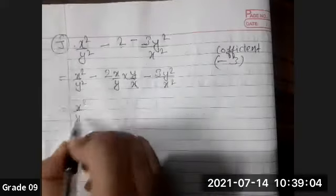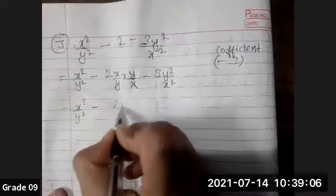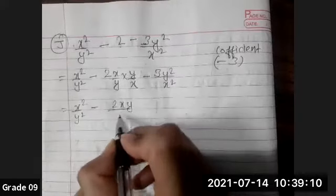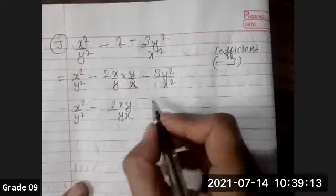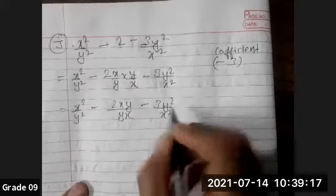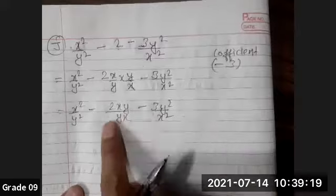Then the solution will be started. So this is 2xy divided by yx—this is the same thing—and 3y²/x². Now the middle coefficient is 3 and the middle term is 2.